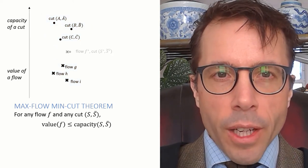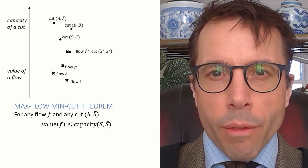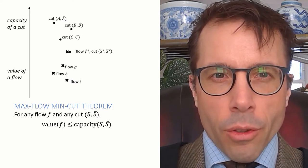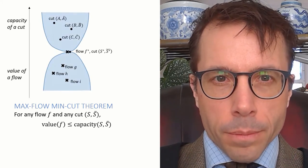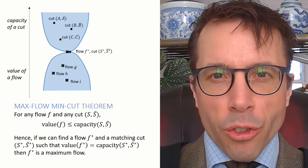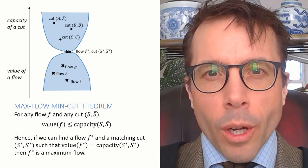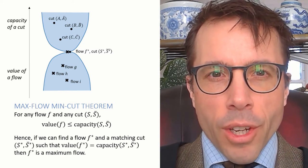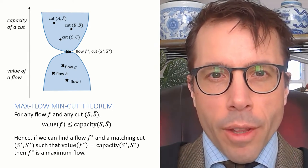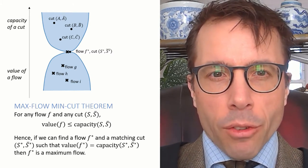The theorem tells us that the cut capacity envelope has got to be above or equal to the flow value envelope. Now, what if I could find a flow, call it F-star, and a matching cut, call it S-star, where the value of F-star is equal to the capacity of S-star? That would tell us that the two envelopes touch, and therefore that F-star must be a maximum flow. There can't possibly be any flow with a higher flow value because that would stray into the cut capacity envelope. Or to say the same thing more formally, the theorem implies that every possible flow value is less than or equal to the capacity of the S-star cut that we found. Therefore, every possible flow value is less than or equal to the value of F-star. Therefore, F-star is a maximum flow.